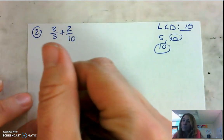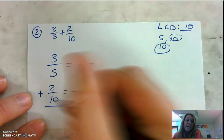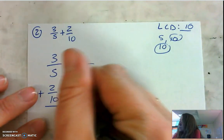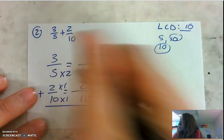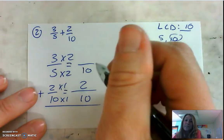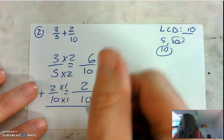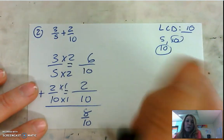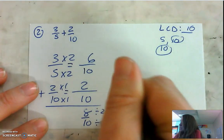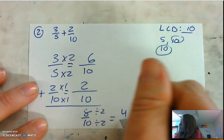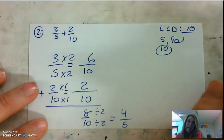We're going to rewrite it vertically — 3 fifths plus 2 tenths — and we're going to find those equivalent fractions with a denominator of 10. To go from tenths to tenths, I multiply by 1. What you do to the bottom, you do to the top. 2 times 1 is 2. To go from fifths to tenths, we multiply by 2. What you do to the bottom, you do to the top. 3 times 2 is 6. Now I have common denominators, so I can add 6 tenths plus 2 tenths equals 8 tenths. I see that my numerator and denominator are both even, so I can divide by 2 to simplify. 8 divided by 2 is 4, 10 divided by 2 is 5. So my answer of 8 tenths simplifies down to 4 fifths. That's your answer for number 2.